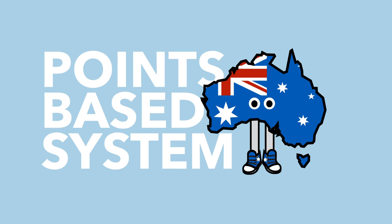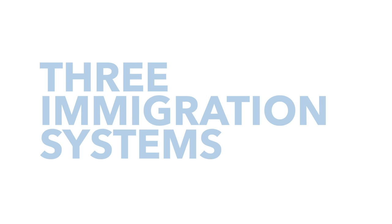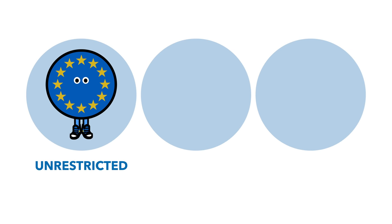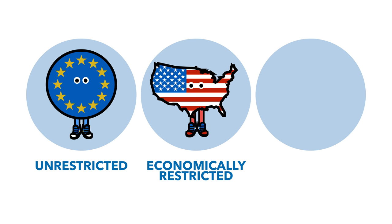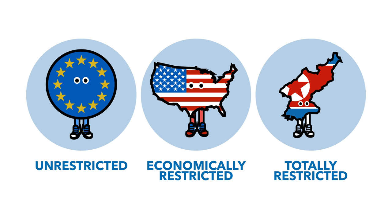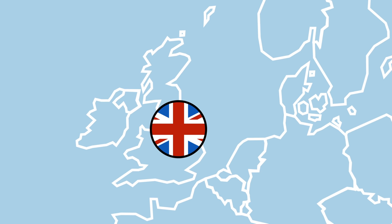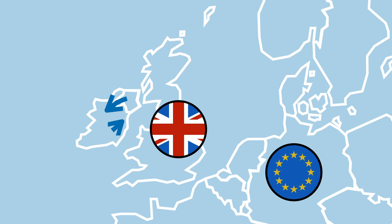So back to the Australian immigration system which everyone in the Conservative Party seems so keen on. Immigration systems can basically be separated into three categories: unrestricted, like the freedom of movement in the EU; economically restricted, like Australia, the US and basically every other developed country in the world; and totally restricted, like North Korea, Eritrea, and to a lesser degree places like Japan. When the UK leaves the EU and ditches freedom of movement, it looks like it will only retain freedom of movement with Ireland.